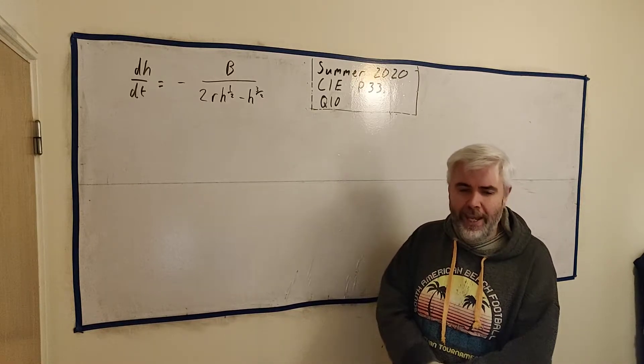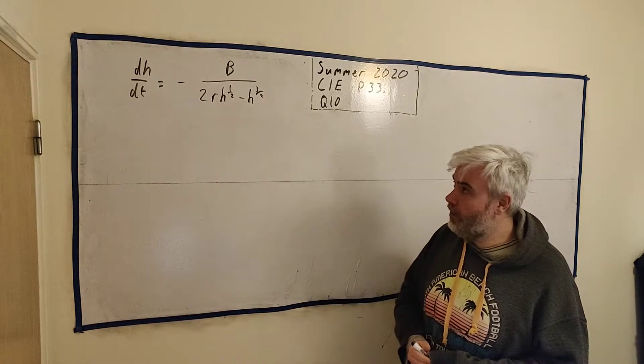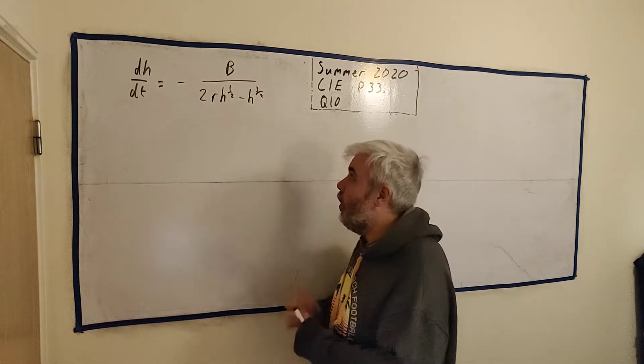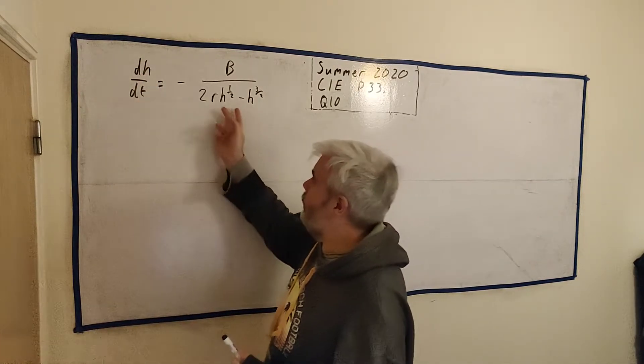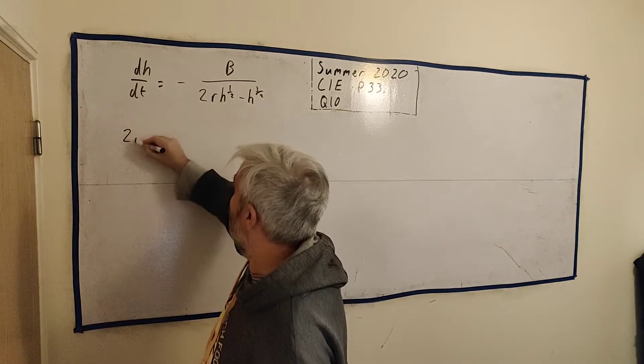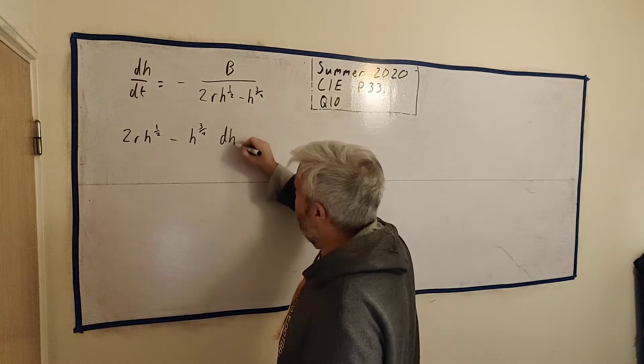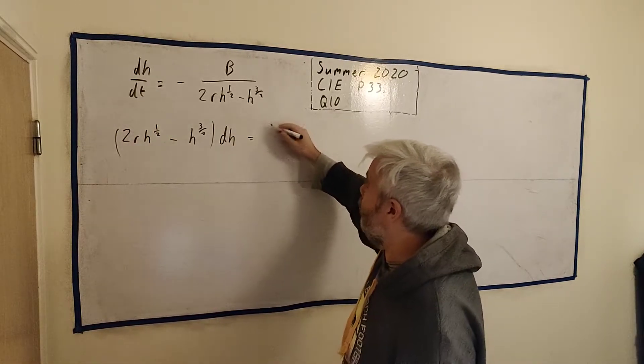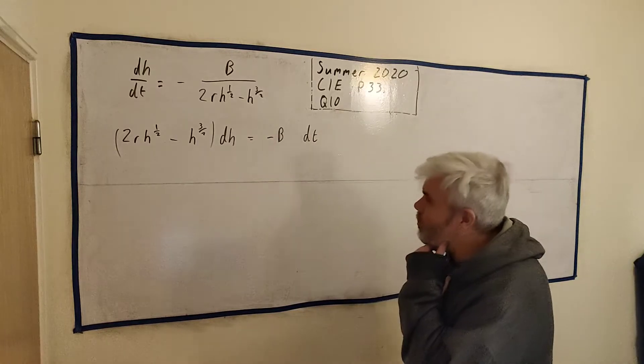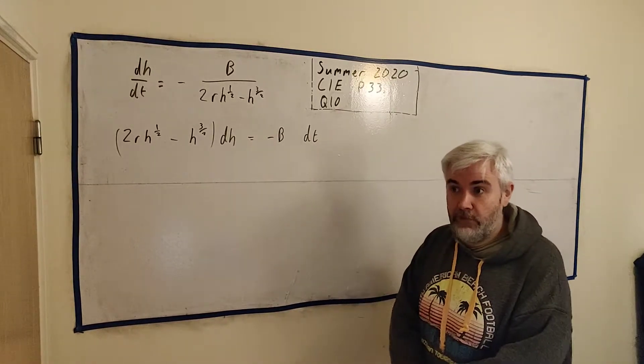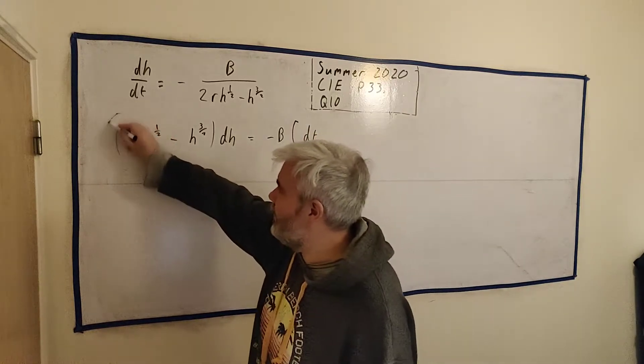So what they ask you to do is solve this differential equation and obtain an expression for t in terms of h and r. So this is a differential equation. The simple ones we do at least, all we need to do is get all the h's with the dh and all the t's with the dt. So let's move the bottom row over here. We will get 2 or h to the half minus h 3/2, and that's dh, put a bracket around that, equals we leave minus b, and then dt. Now some students get confused here. There's no t's. What goes with the t's? All the t's, the zero t's. There's zero t's here. So let's leave it the way it is and we can integrate both sides.